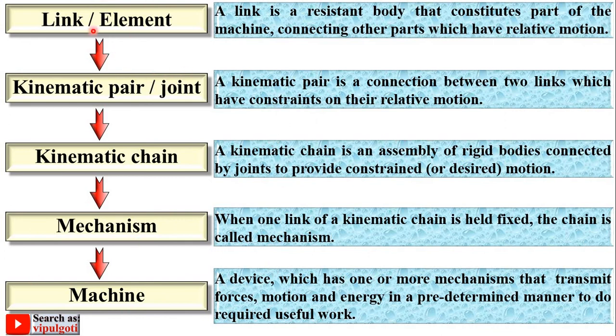Simply we can say, link is used to make a kinematic pair. Kinematic pair is used to make a kinematic chain. Kinematic chain is used to make a mechanism, and mechanism is used to make a machine. The links are used to make a kinematic pair, and more kinematic pairs are joined to make kinematic chain. One link is fixed in kinematic chain, then it is a mechanism. More mechanisms are used in a machine.